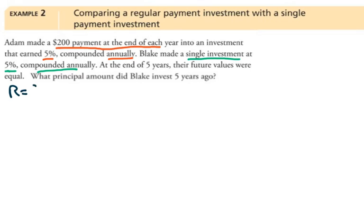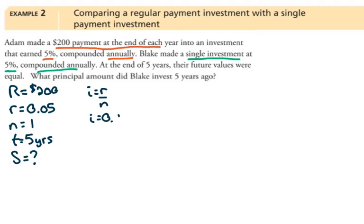So with Adam, his regular payment is $200. His interest rate is 5%, 0.05. Compounded annually, so n is 1. T, we are dealing with a 5 year term. S is what we are trying to calculate, the value of Adam's investment at the end of this time. And we have to calculate i, which is r over n. In this case, 0.05 divided by 1 works out to 0.05.